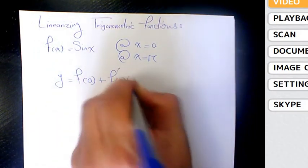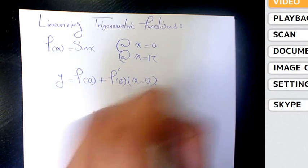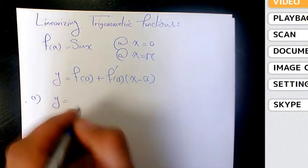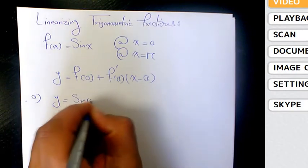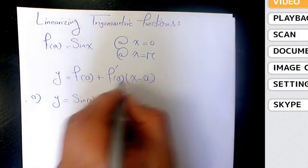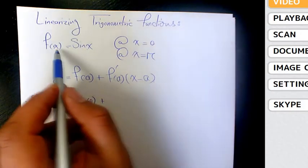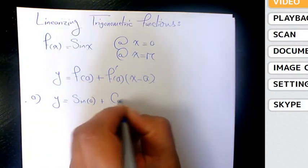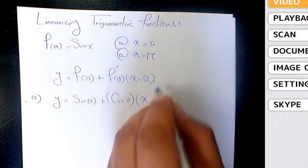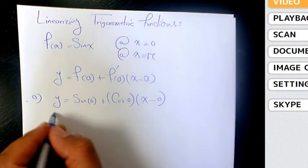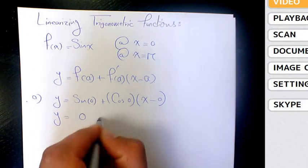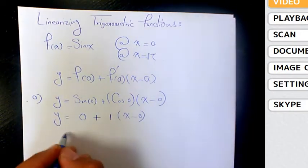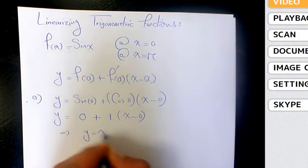For part a, we can say y = sin(0) + f'(0)(x - 0). The derivative of sin(x) is cos(x), so it's going to be cos(0) times (x - 0). Sin(0) is 0, cos(0) is 1, so that's going to be y = x.